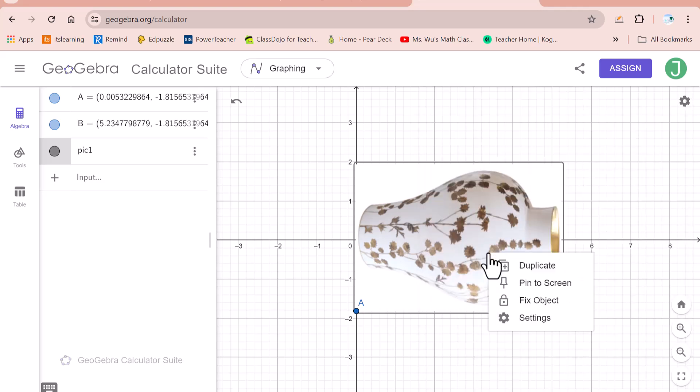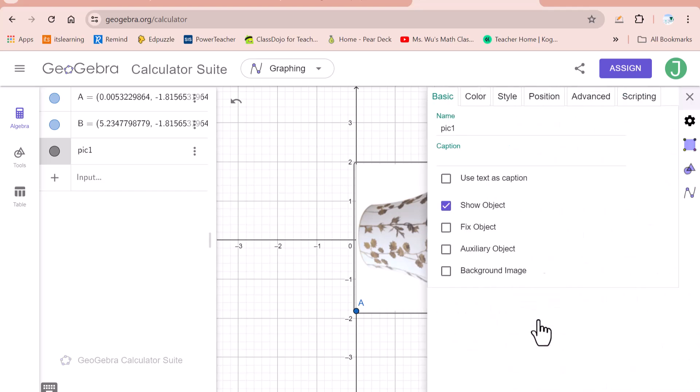Right click this image. Click on setting. Color. Paint this opacity into 50. Then close.